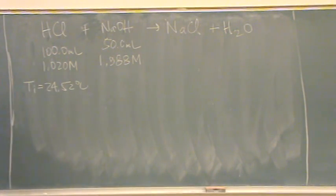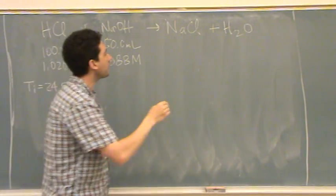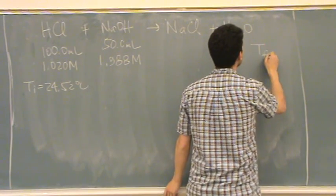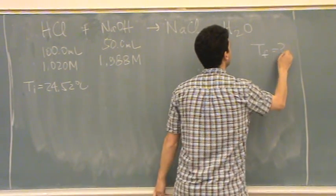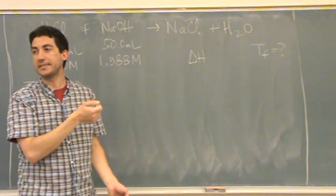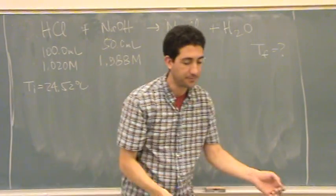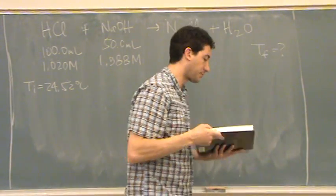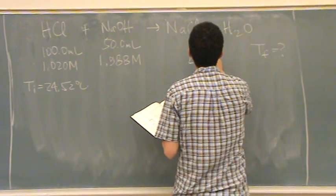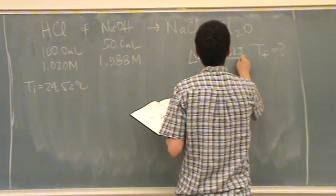And that's going to be true whenever you have strong acids, strong bases. They want to know the final temperature after this happens. That's question mark. They give us delta H of what they call neutralization, or that's basically delta H of reaction. That number is minus 56 kilojoules per mole.